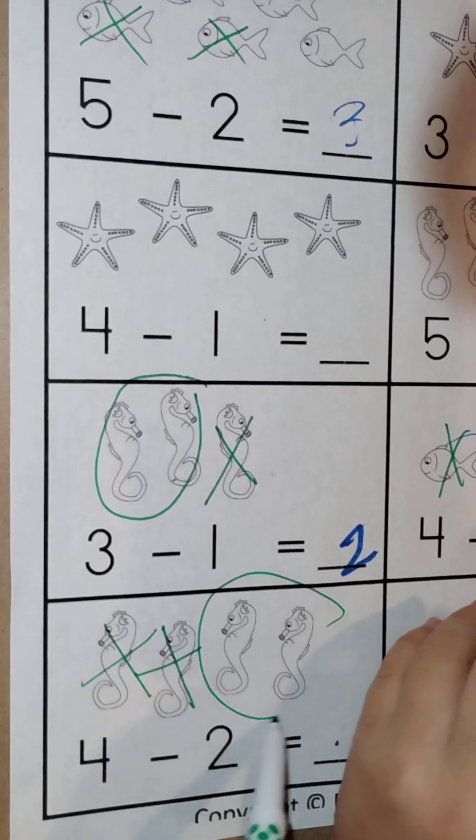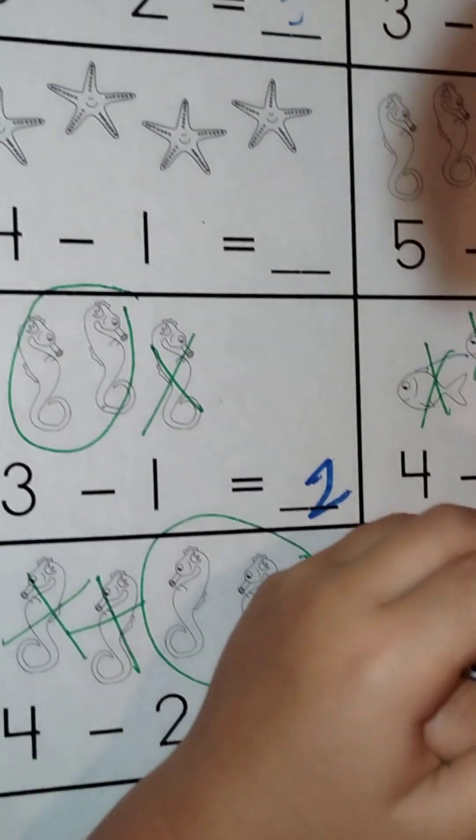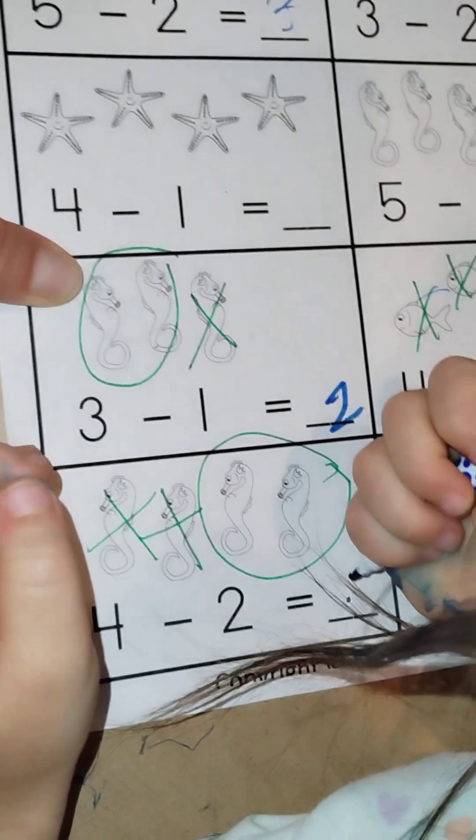One, two equals how many seahorses? One, two seahorses. Two! Yes, write the number two. Can you write, or do you need help?